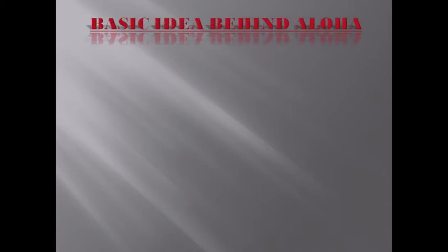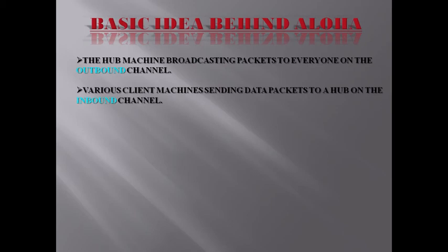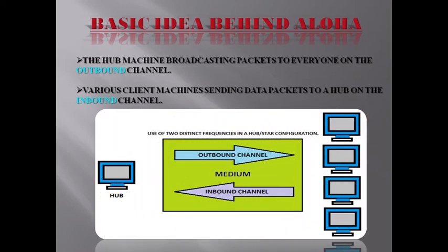The basic idea behind ALOHA: the hub machine broadcasts packets to everyone on the outbound channel, while various client machines send data packets to the hub on the inbound channel, using two distinct frequencies in a hub-and-star configuration. ALOHA is essentially a multiple access protocol where there is a shared medium — we can think of it as an Ethernet wire — and there are different stations used to transmit different frames with various constraints.